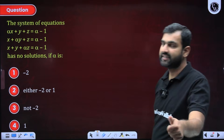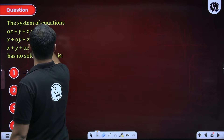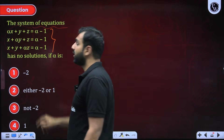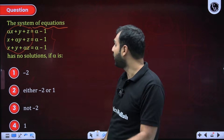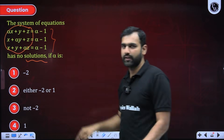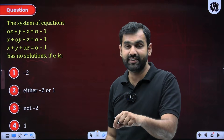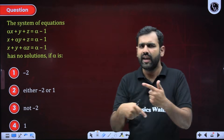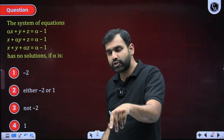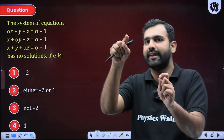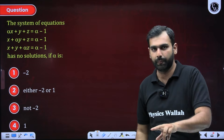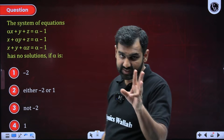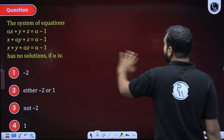Next: a system of equations with constant term (alpha - 1) has no solutions. Using Cramer's rule: if there are infinite solutions, delta = delta1 = delta2 = delta3 = 0. If there are no solutions, delta = 0 but at least one of delta1, delta2, delta3 is non-zero. If there is a unique solution, delta is non-zero. For no solution: first, delta should be 0.